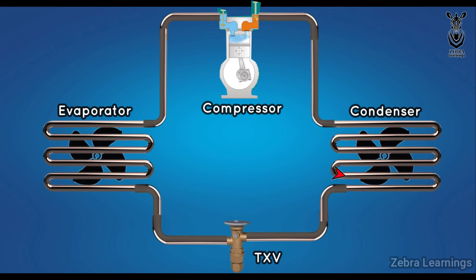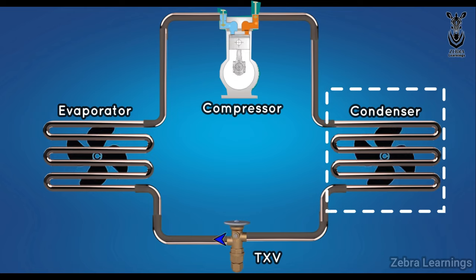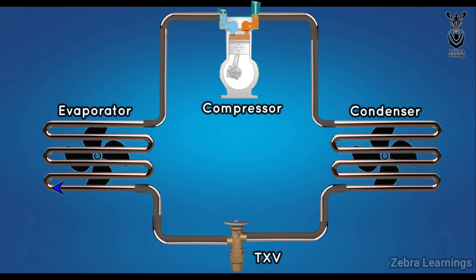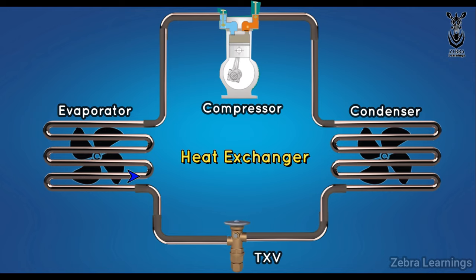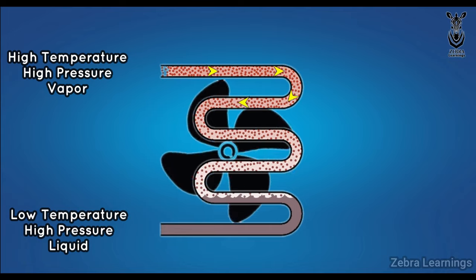After the compressor, the refrigerant goes to the condenser. Condenser coil is a heat exchanger in the refrigeration cycle. The condenser coil cools the refrigerant coming from the compressor at a high temperature.